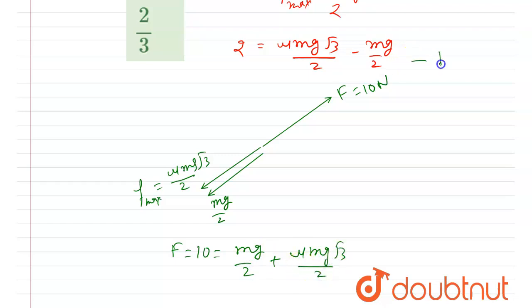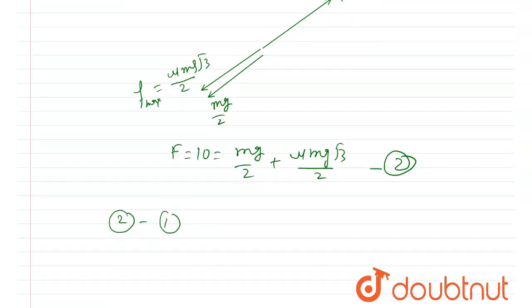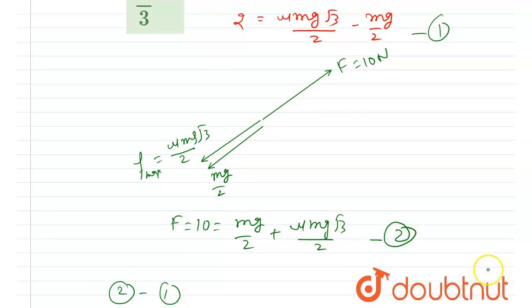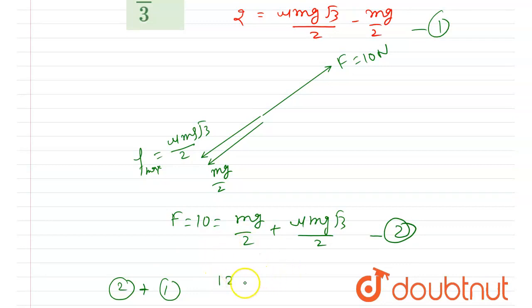So we have two equations — equation 1 and equation 2 — and we want μ. To find mg, we can subtract the two equations; to find μ, we add the two equations. So I will add equation 1 and equation 2.